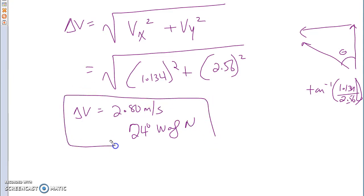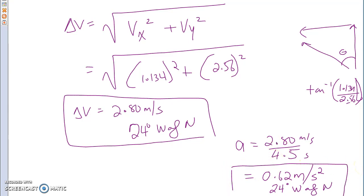Now we're not done the question. So what we're gonna do next, of course, is our acceleration, which is 2.80 divided by 4.5 meters per second, divided by second, which gives us 0.62 meters per second squared. Of course, 24 degrees west of north. Now, as I suggested in class, the acceleration is due to change in velocity and or the change in direction. And this is what we're trying to solve here.